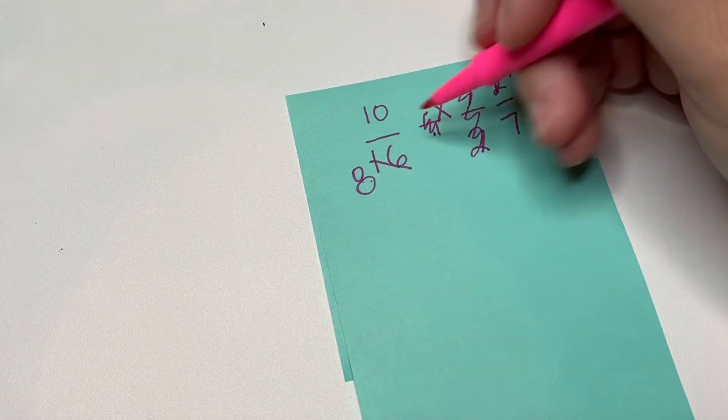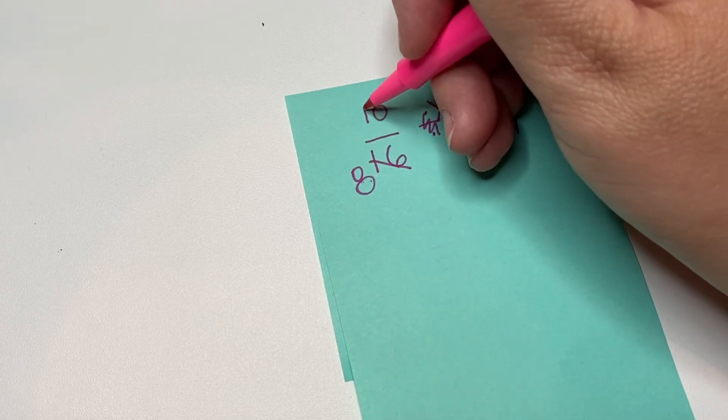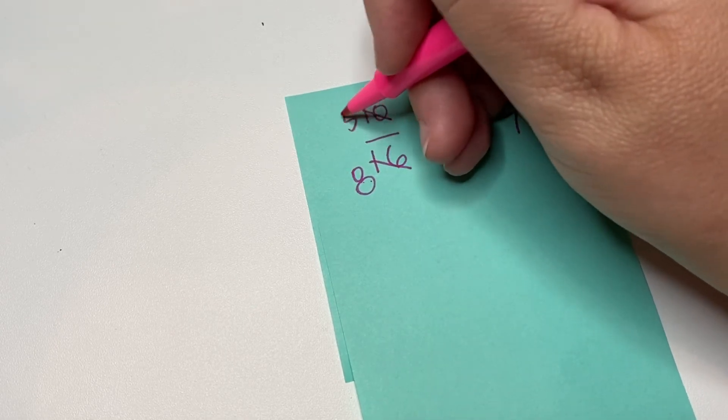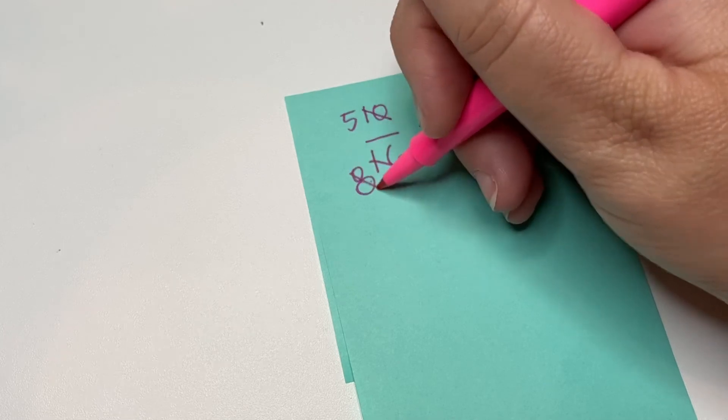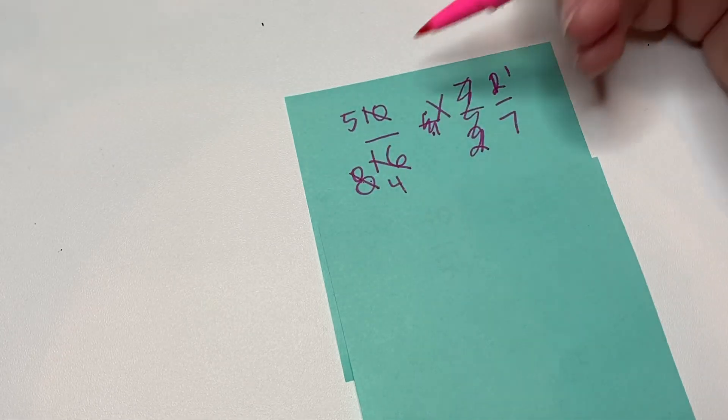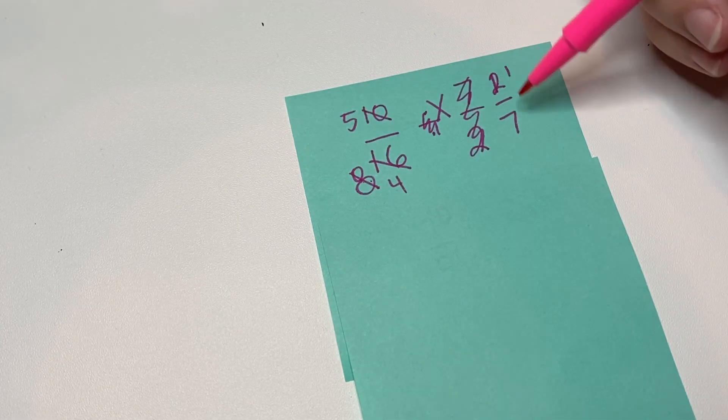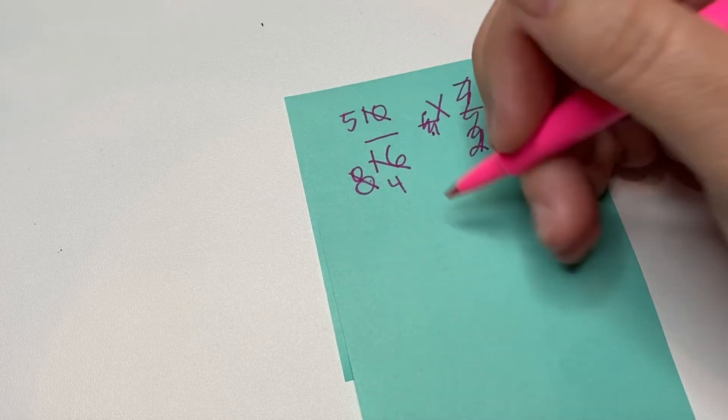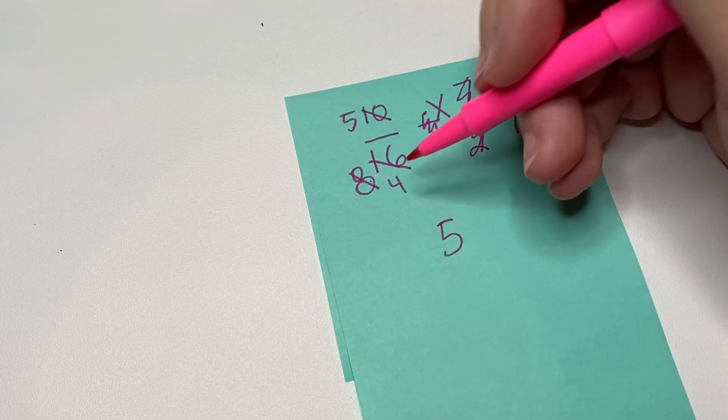So two goes into ten five times and two goes into eight four times. So now we have four over five and one over seven. Five times one is five and four times seven is twenty-eight.